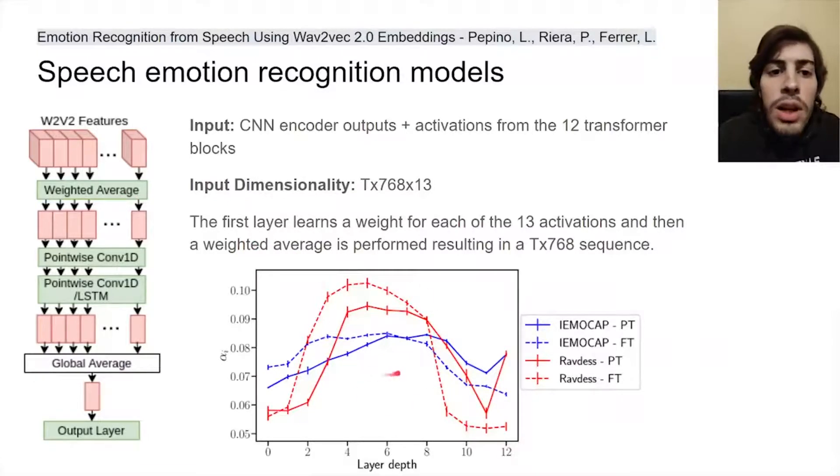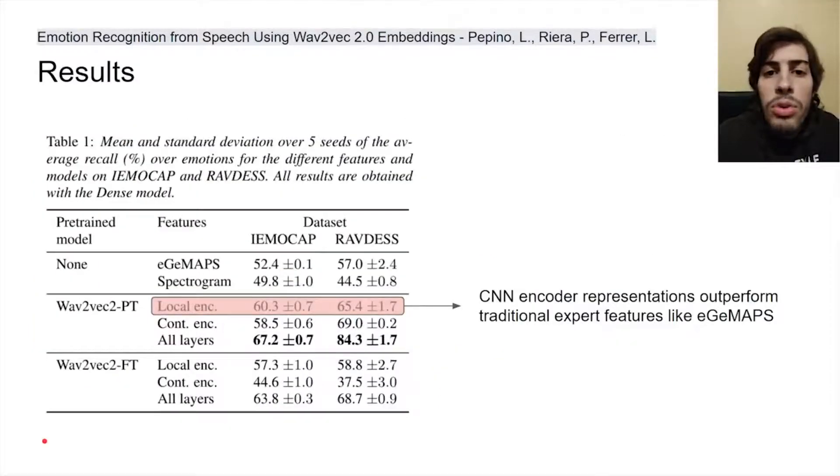Then, the neural network we use is very simple to avoid overfitting. It consists of two fully connected layers applied time by time step, and then the resulting sequence is averaged in the time dimension. Finally, there is an output layer with softmax to predict the different emotions. We found that the CNN encoder outputs alone are useful features which outperform expert features like eGeMAPS.